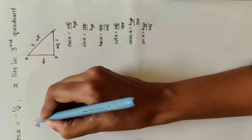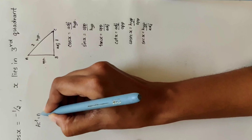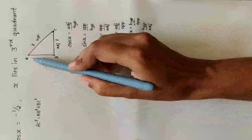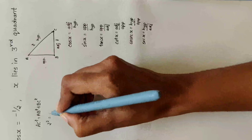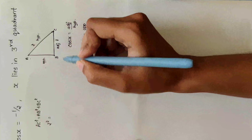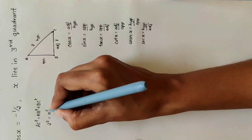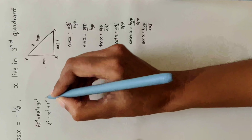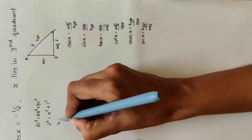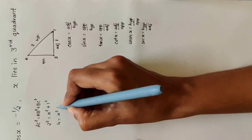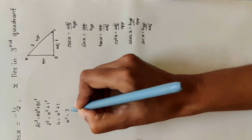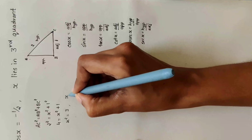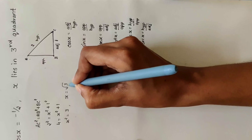Using the Pythagorean theorem: AC² = AB² + BC². So 2² = x² + 1². That gives 4 = x² + 1, so x² = 3, and x = √3.